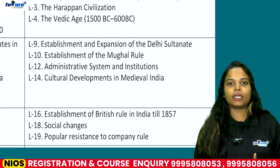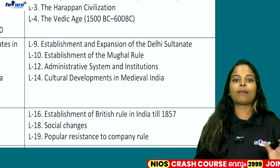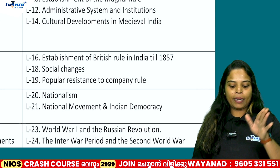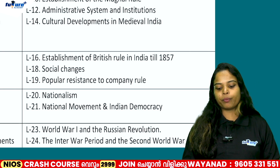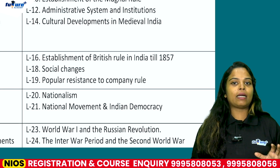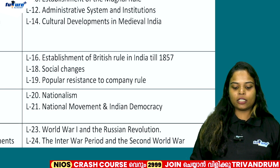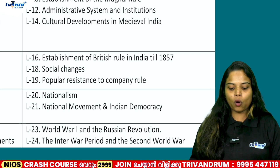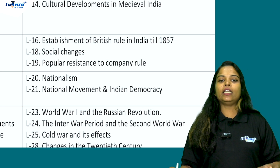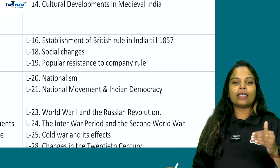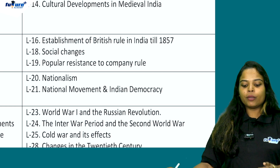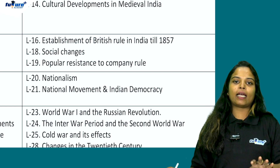The 8th module covers public examination chapters. The 15th chapter is the Establishment of British Rule in India until 1857. The 17th chapter is Popular Resistance to Company Rules. The next module includes Nationalism. The 20th chapter is Nationalism, and the 29th chapter covers the National Movement and Indian Democracy — these are public examination chapters.